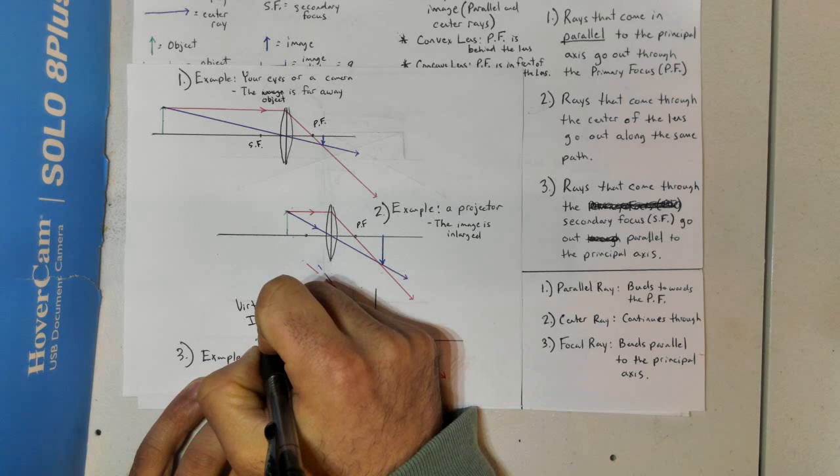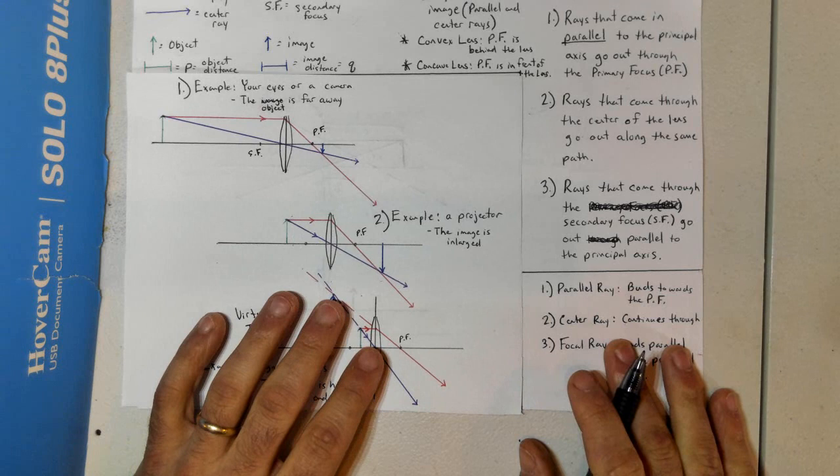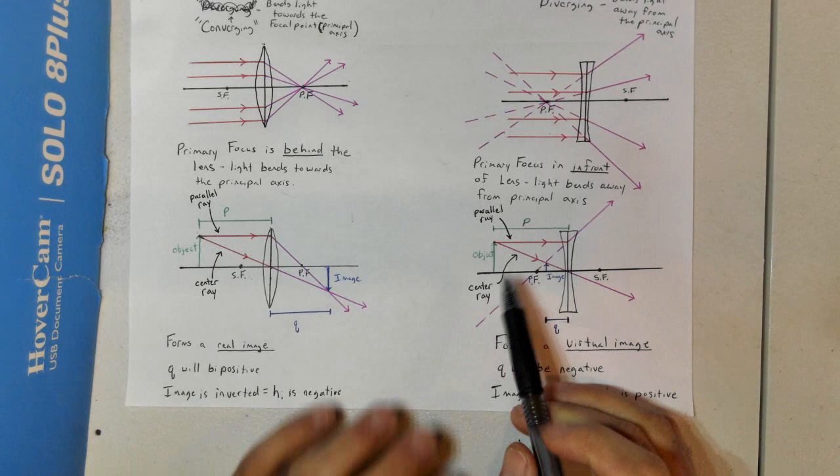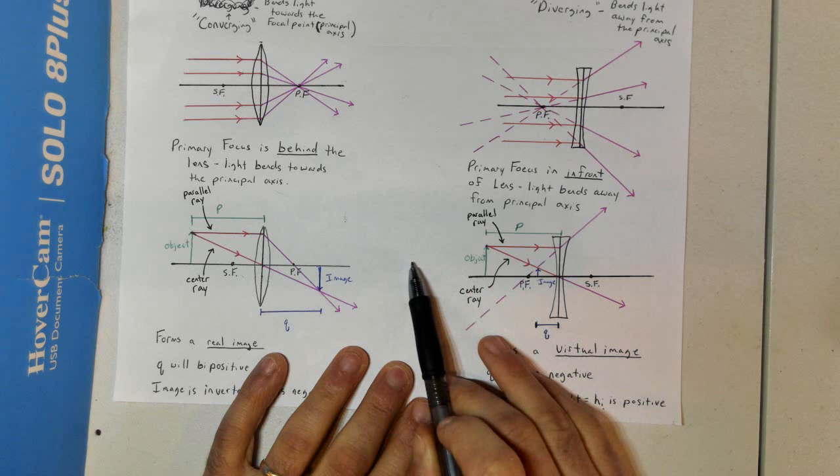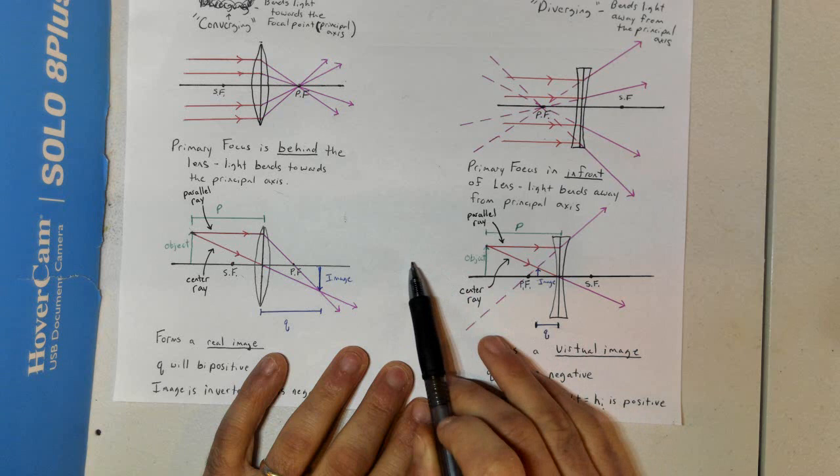This is when we have a virtual image because it's not real light rays that are converging. Just to make sure we're clear: moving the object back or forth for a concave lens doesn't really change how the image is created — it just changes where the image is located, not the structure of it. Hopefully that helped clear some things up.